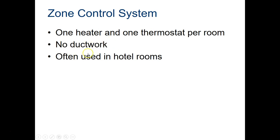A zone control system has one heater and thermostat per room. There's no ductwork because it's a single unit tucked into that room — the return is on the bottom and the supply is on the top. This is often used in hotel rooms. A zone control system across a big area like a hotel connects back to one large central system — a chiller, boiler, or similar — that generates the heat or cooling, and supplies all those different rooms with fewer pipes. Inside each room the unit can call for heat or cooling using one of the two pipe sets.